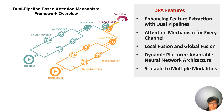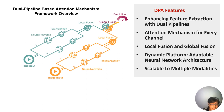Our dual pipelines converge in harmony, first through local fusion, where attention-weighted features combine, and then on to the global fusion, capturing the intricate insights between modalities, revealing a more comprehensive picture for prediction. Flexibility is our framework's hallmark — it adapts, it scales, accommodating more modalities, fitting different neural networks like puzzle pieces.